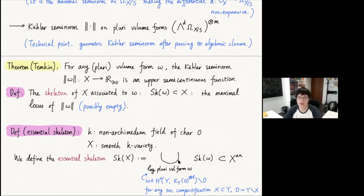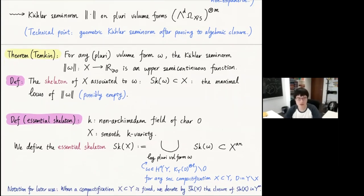Since we have taken union over all volume forms, the essential skeleton is canonically associated to X. Let's introduce a notation for later use. When a compactification X in Y is fixed, it is natural to consider the closure of the essential skeleton of X inside the analytification of Y. We denote this closure by Sk-bar of X, and sometimes we call it the closed essential skeleton.